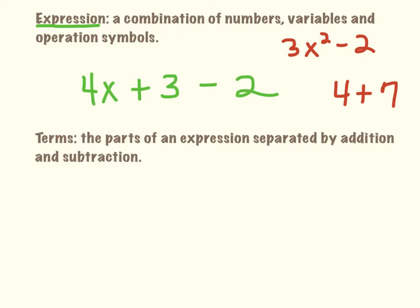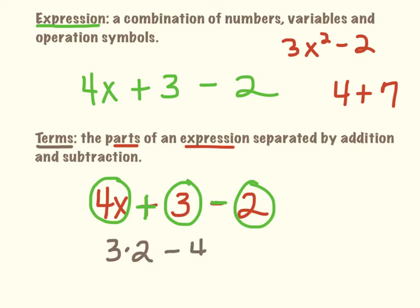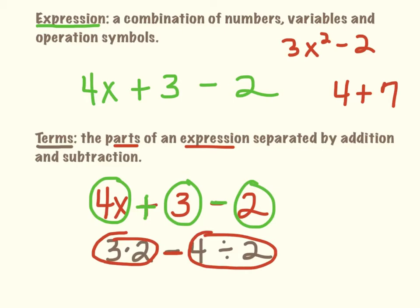Within an expression there's something called a term. Terms are very important — they are the parts of an expression that are separated by adding and subtracting. So in 4x plus 3 minus 2, my terms are everything separated by the adding and subtracting signs: 4x is a term, 3 is a term, and 2 is a term. In 3 times 2 minus 4 divided by 2, the subtraction sign separates it: 3 times 2 is one term, and 4 divided by 2 is another term. Terms are the things separated by my adding and subtracting symbols.